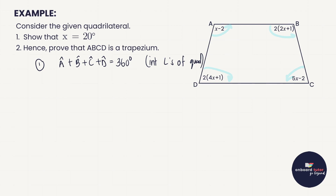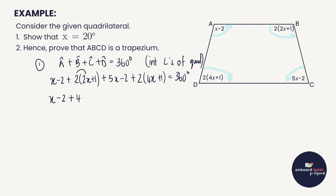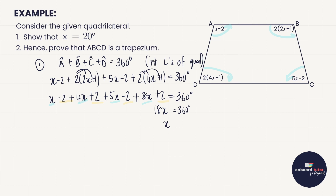The interior angles of a quadrilateral add up to 360 degrees. Substituting in: (x − 2) + 2(2x + 1) + (5x − 2) + 2(4x + 1) = 360 degrees. Multiplying out gives x − 2 + 4x + 2 + 5x − 2 + 8x + 2 = 360. Collecting like terms, those twos cancel each other out and we get 18x = 360. Dividing both sides by 18, we find x equals 20 degrees — proven.